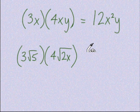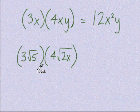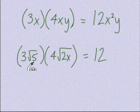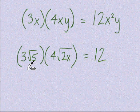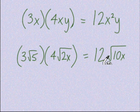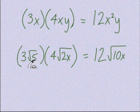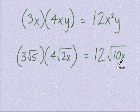We want to approach multiplying radicals in a very similar way. Think about first the numbers on the outside — these are the coefficients. So we're going to do 3 times 4 to get 12. Then we look at the numbers inside the radical. Since they're both under a square root, we can multiply those together: 5 times 2x gives us 10x inside a radical, because the factors being multiplied are inside radicals, so the product is also inside a radical.